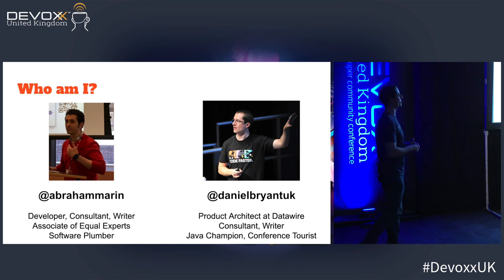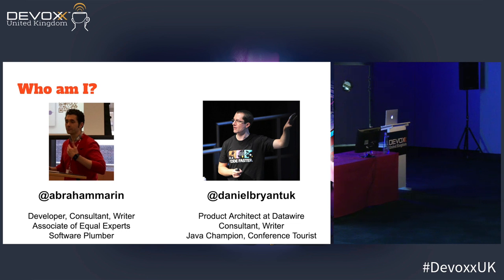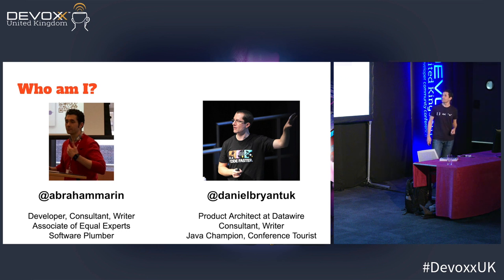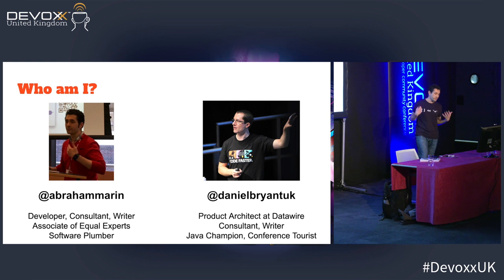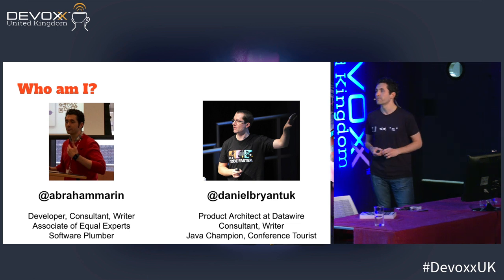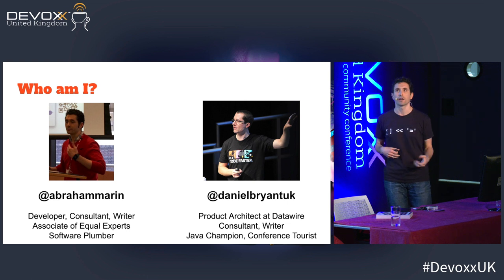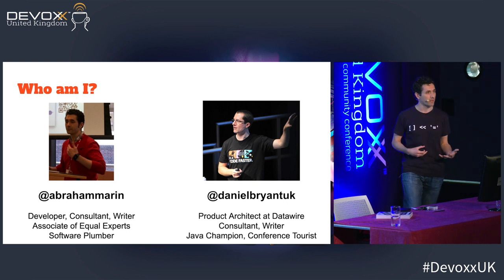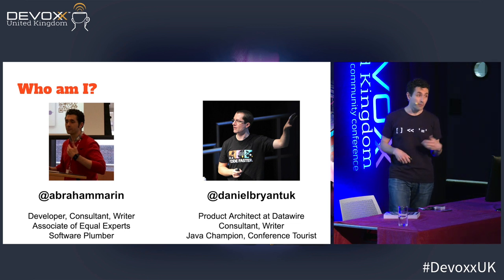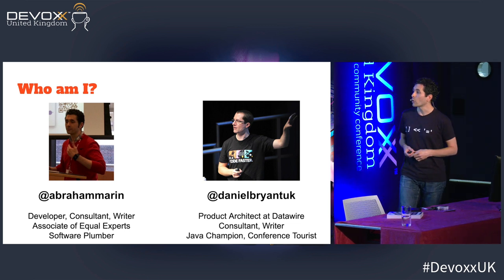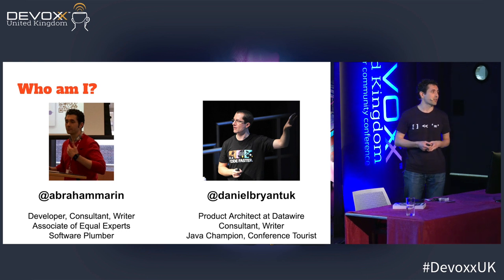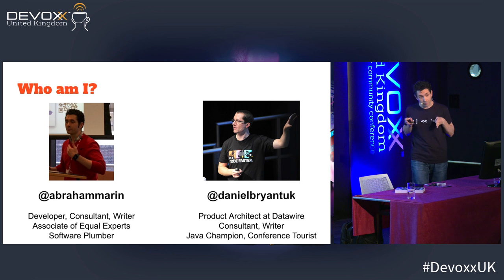My partner in arms here is Abraham. I'm Abraham — hopefully I remember the talk! Similar to Daniel's case, I'm a Java and Scala developer, although I do most of my work with Equal Expert, a consultancy mostly based in London but now expanding into other places. They like to describe themselves as doing digital transformation — basically trying to help change the culture and operation of an organization through technology. I also like to describe myself as a software plumber, because at the end of the day you just connect things to things, hoping nothing bad leaks out and everything flows into the right places.